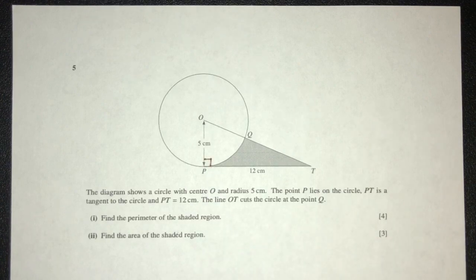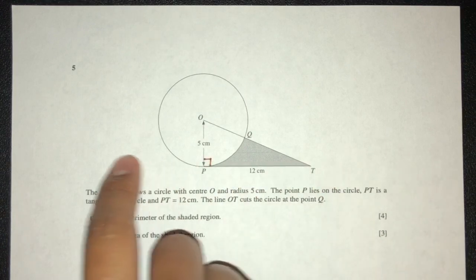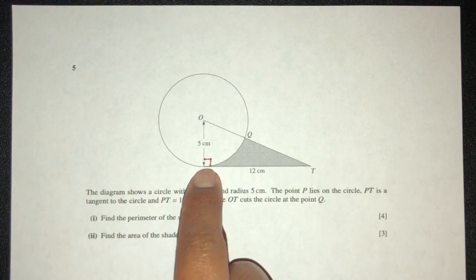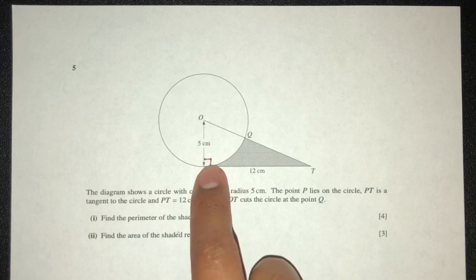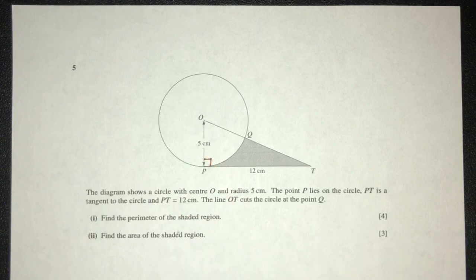We have to know this property because when we have a tangent and the point here which touches the circle joins with the center, the angle here will have to be 90 degrees.